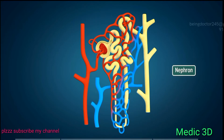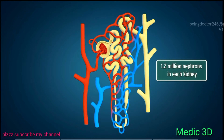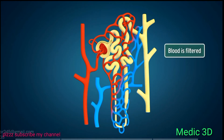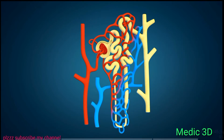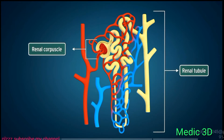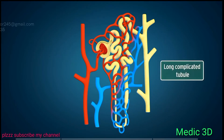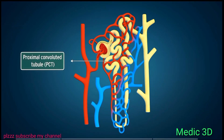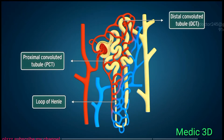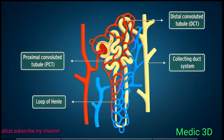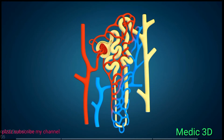The basic structural and functional unit of the kidney is the nephron. Around 1.2 million nephrons are present in each human kidney. The nephrons are hollow tubes through which blood is filtered and modified to finally form urine. A nephron consists of two major parts: the renal corpuscle and the renal tubule. The renal tubule is divisible into the proximal convoluted tubule (PCT), loop of Henle, distal convoluted tubule (DCT), and collecting duct system.